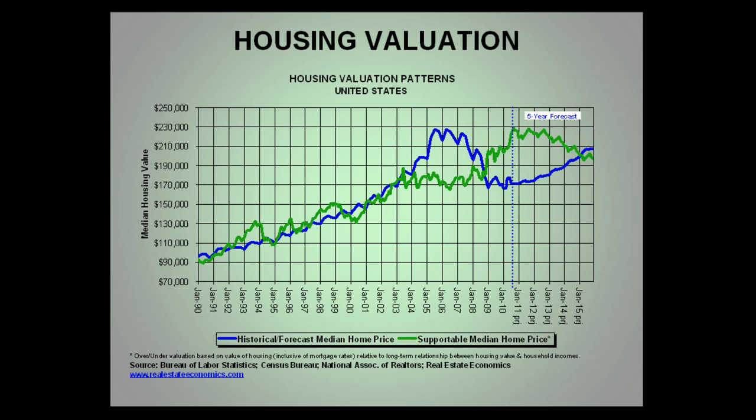We have lower prices since 2009 and through the forecast period. If you notice, the green supportable home price is above the forecast home price — people could afford a more expensive home today than the median price would indicate, based on current incomes and interest rates. Now why aren't they doing that? Because of poor sentiment, poor employment conditions, and poor economic background — people don't want to go out and commit. But rates are low and incomes are steady, so homes are generally very, very affordable.